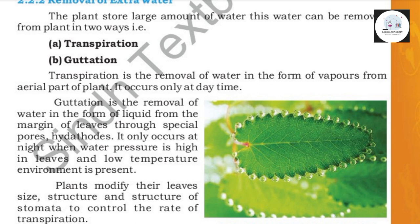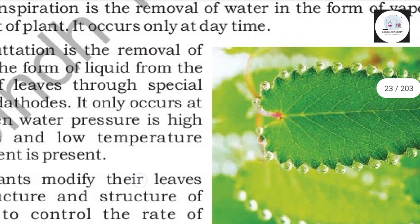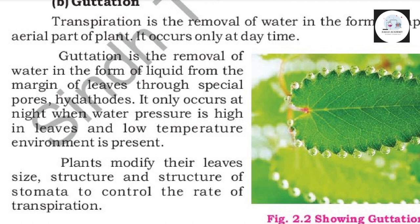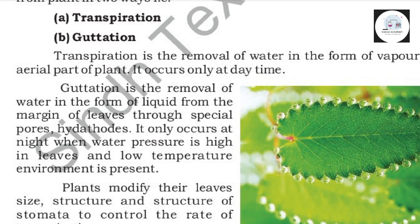Guttation is the removal of water in the form of liquid drops from the margin of leaves through special pores called hydathodes. Guttation only occurs at night when water pressure is high in the leaves.